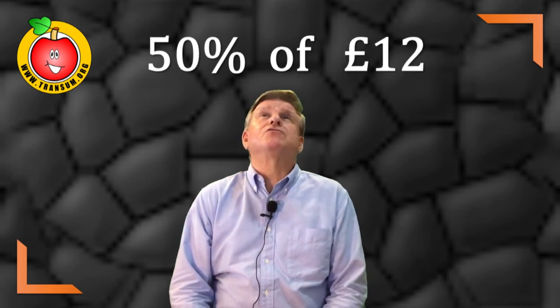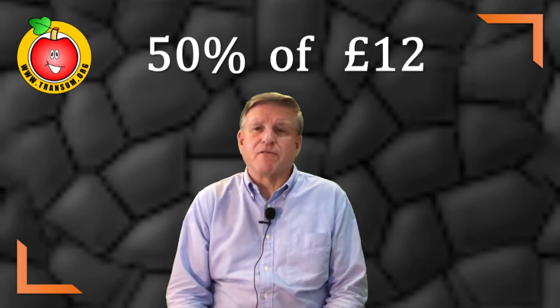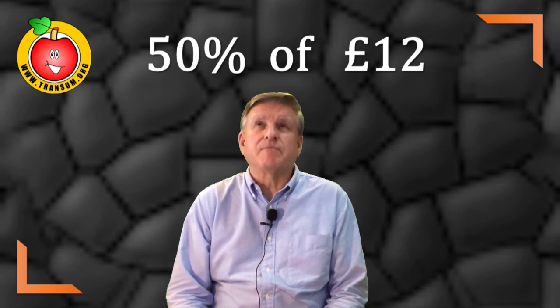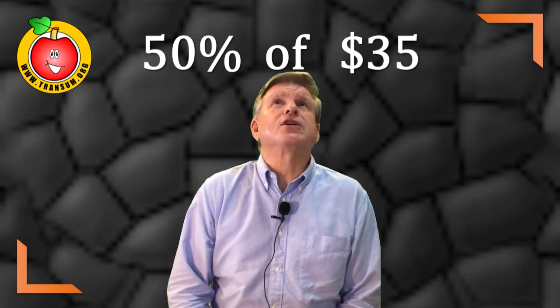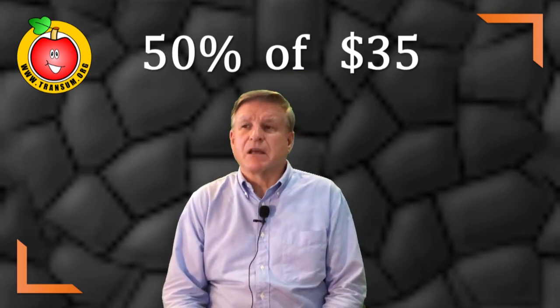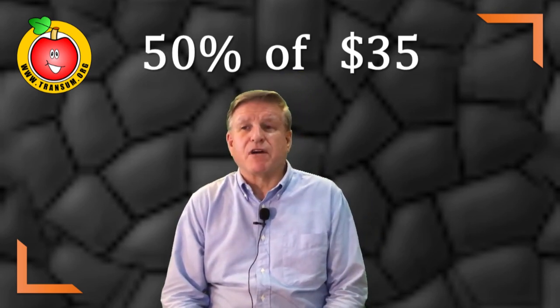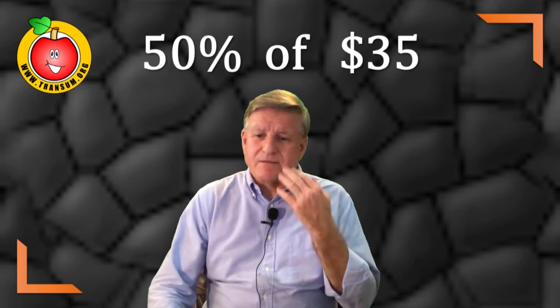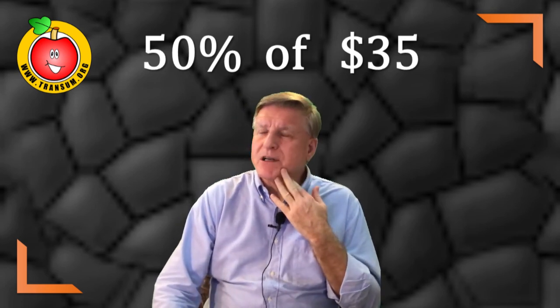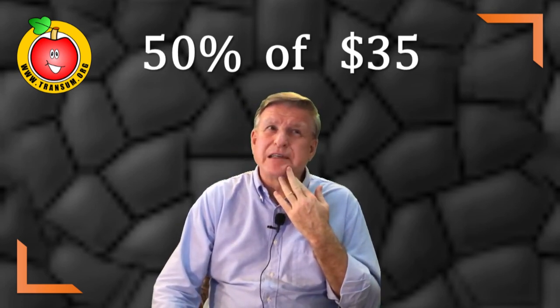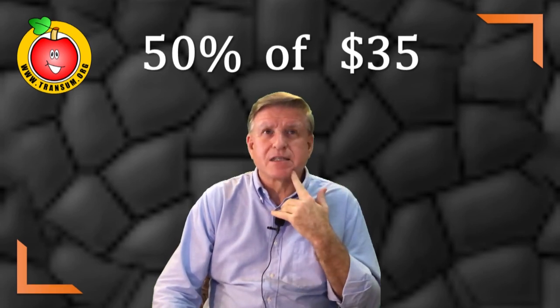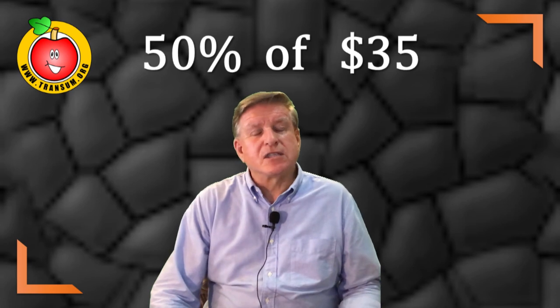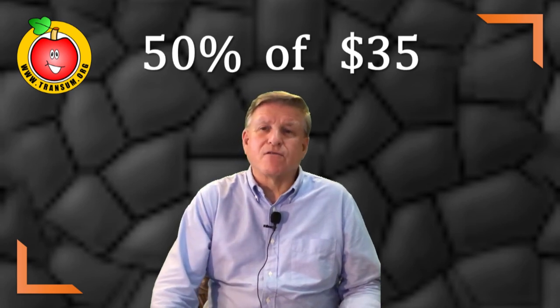Or 50% of 12. That's half of 12. That's six. Or 50% of 35 dollars. That means half of 35 dollars. Well 35 is an odd number but half of 34 is 17 and half of one dollar is 50 cents. So it must be $17.50.